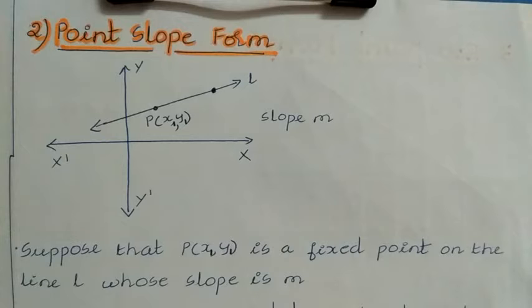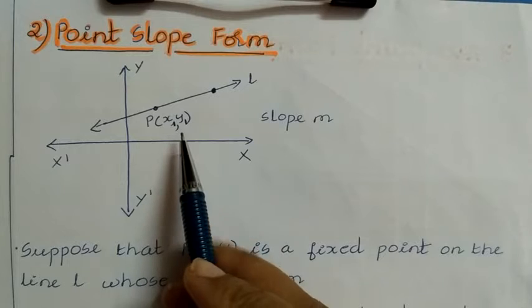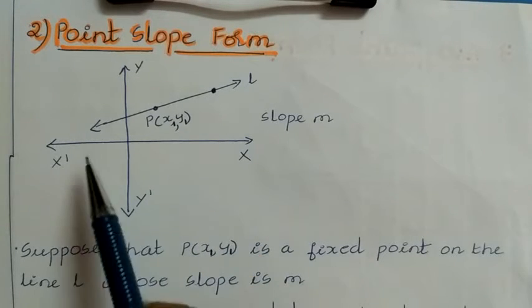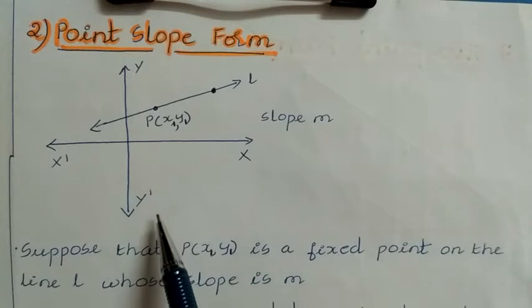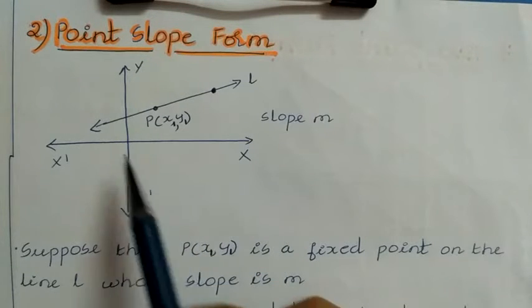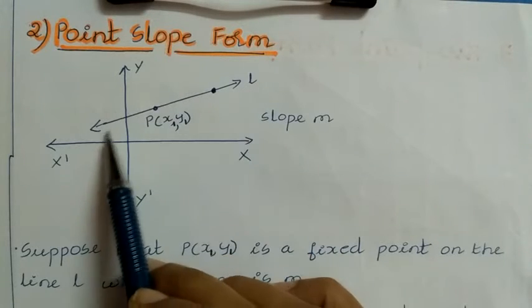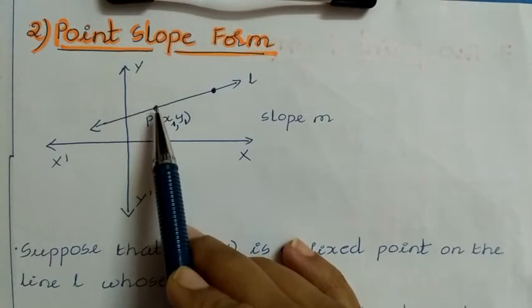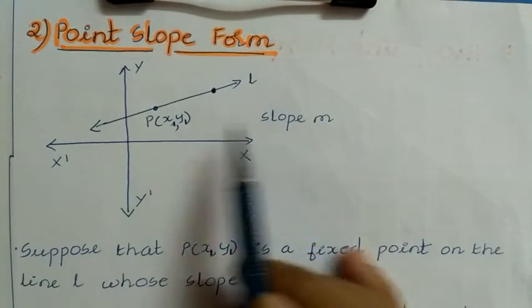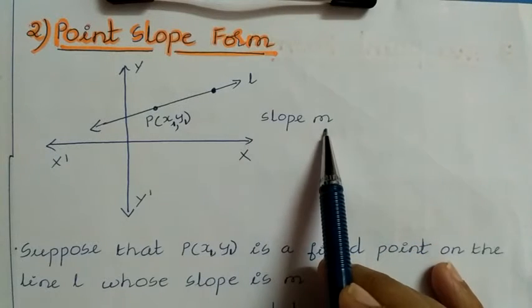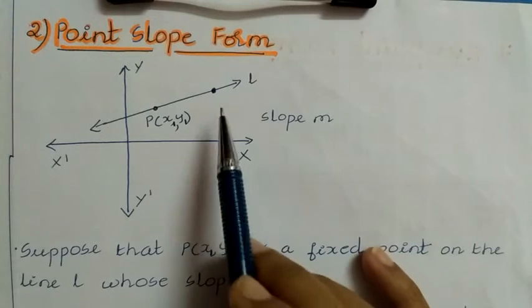In the case of point-slope form, a point and a slope are both given, so two values are known: the slope and the point. Let us take a Cartesian plane divided into two coordinate axes — the x-axis and y-axis. On this Cartesian plane, consider a straight line L, and on this line, let us consider a given point P with coordinates (x1, y1). The slope of line L we take as m.